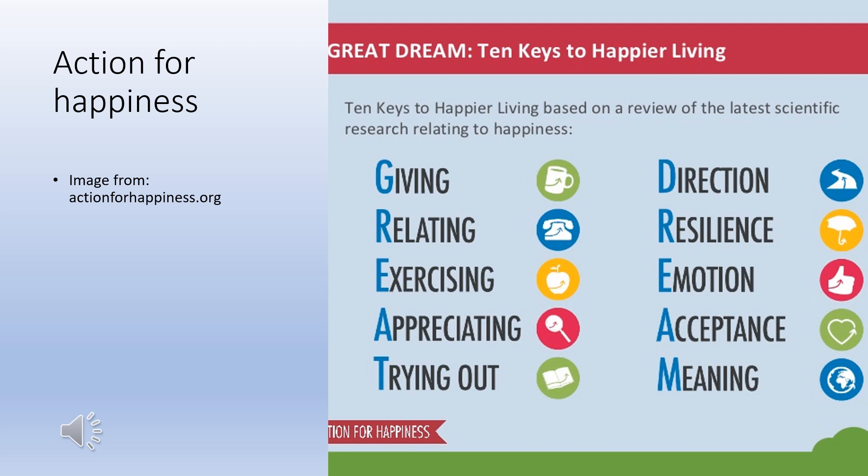I really like this poster from Action for Happiness—Ten Keys to Happier Living. Giving: do things for others. Relating: connect with people. Exercising: take care of your body. Awareness: live life mindfully. Trying out: keep learning new things. Direction: have goals to look forward to. Resilience: find ways to bounce back. Emotions: look for what's good. Acceptance: be comfortable with who you are. And meaning: be part of something bigger.